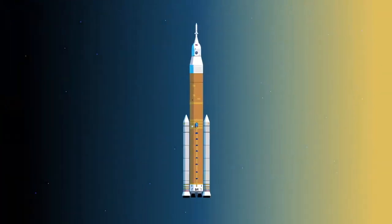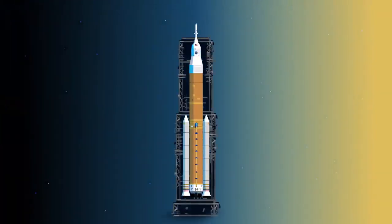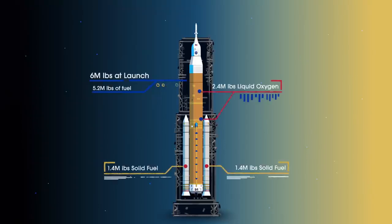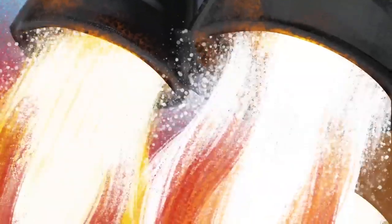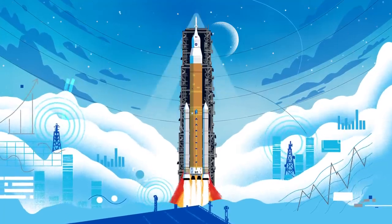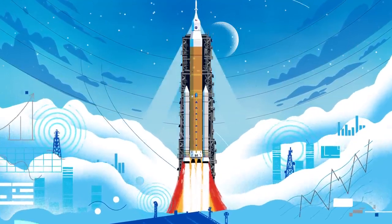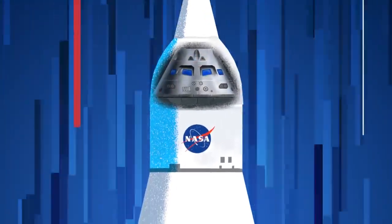Sitting on the launch pad, the entire rocket, fully fueled, weighs just over 6 million pounds, 5.2 million of which is just the fuel. Once ignited, there's no stopping what comes next. All four RS-25 engines and the two solid rocket boosters come to life thundering our crew upwards.